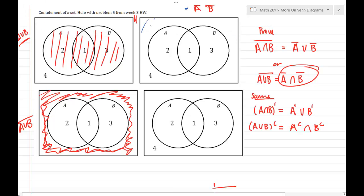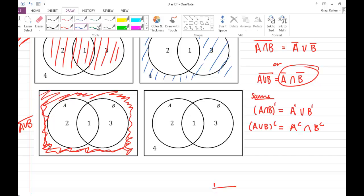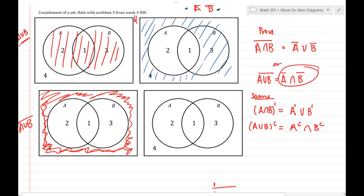So A complement is just anything that's outside of A. So I'll take region 4 and region 3 since those are the only regions outside of A. And then B, I'll take as green. So B complement is anything outside of B. So I'm going to take region 2 and region 4.